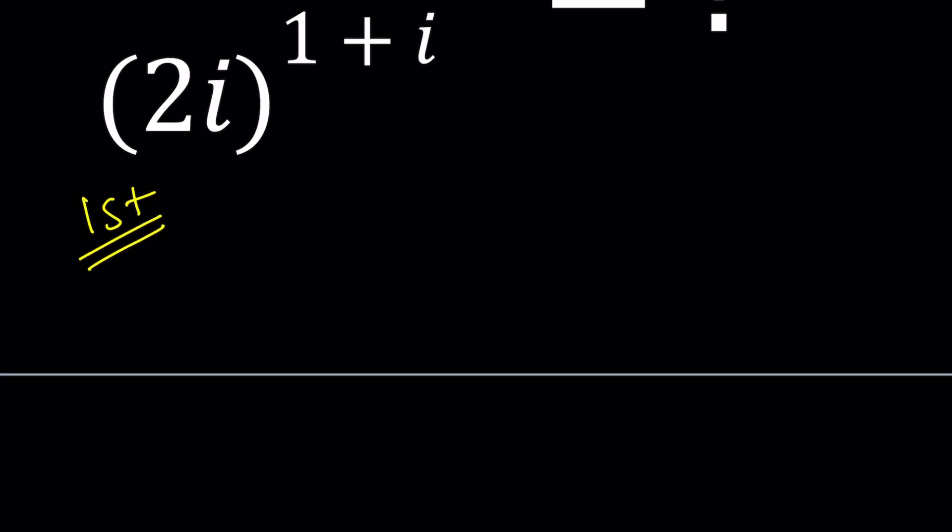So let's start with the first method. I want to show you the definition. What does z to the w mean when z and w are both complex numbers? I'm pretty sure you know what three to the second power is, or negative one to the power zero. They have a certain meaning which is pretty easy to interpret. But with the complex numbers,